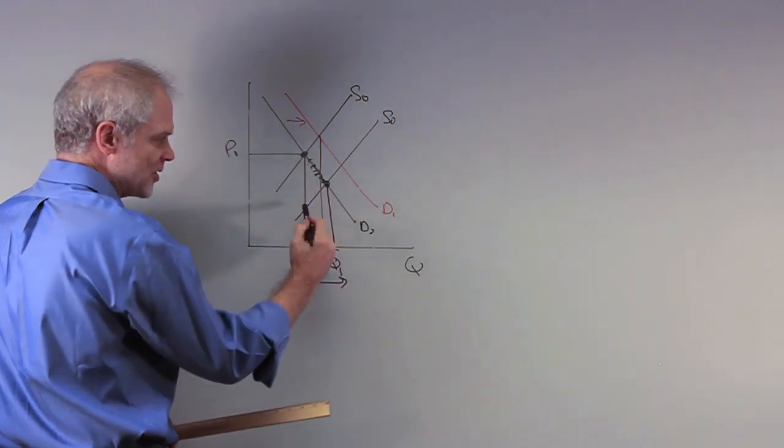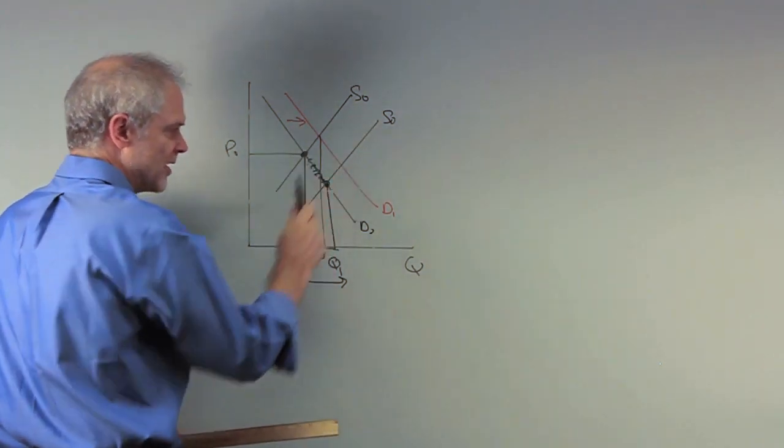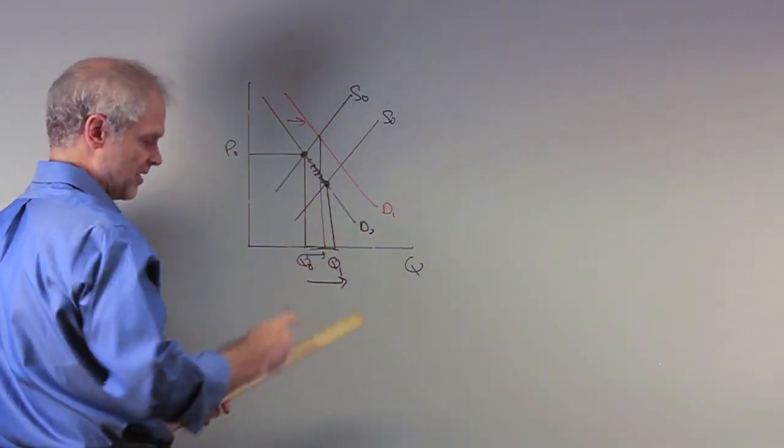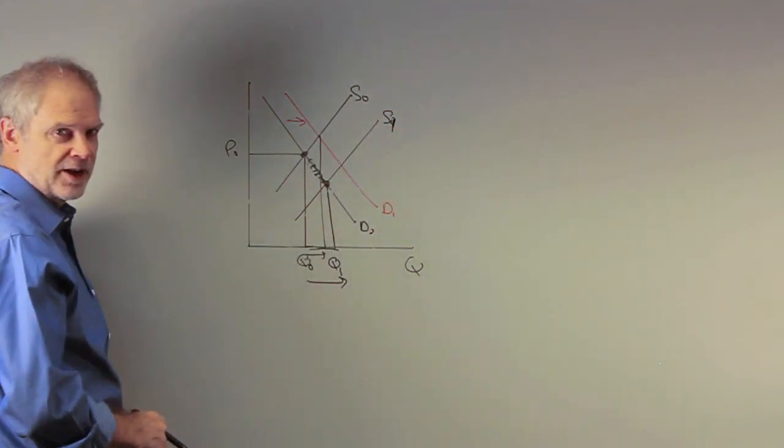The increase in supply lowers price and causes people to move along their demand curves to where the new intersection occurs between the new supply curve, the increased supply curve, you should label this one, and the original demand curve.